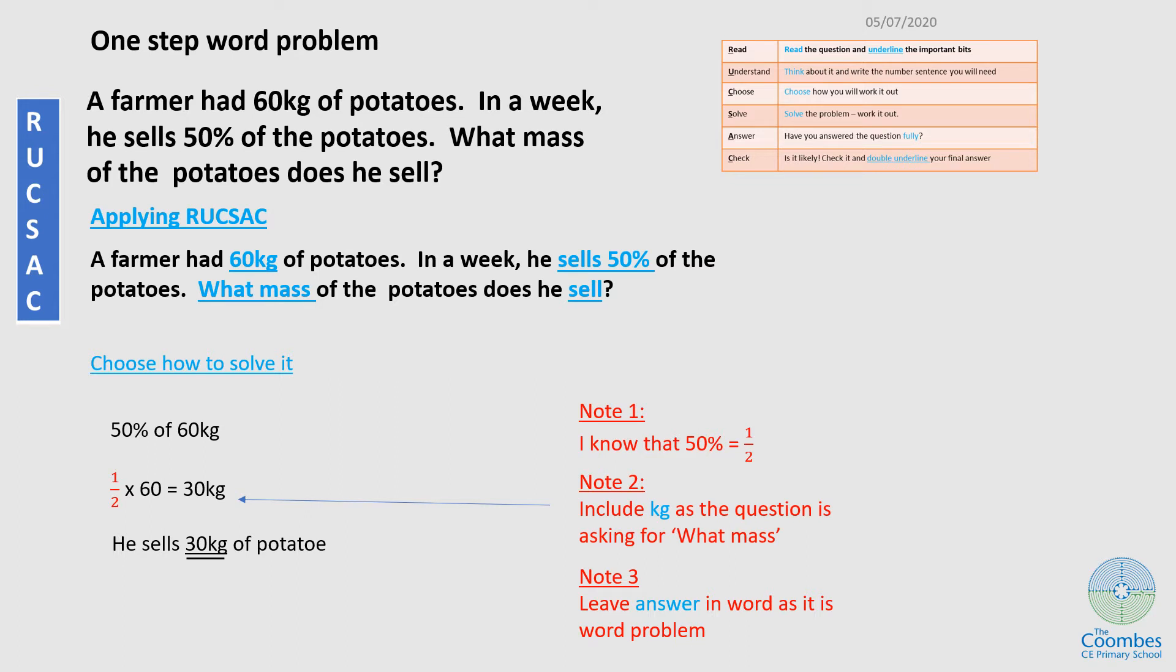Now, I can think about it and then write a number sentence. So from the question, he sells 50% of 60. So I'm going to write it as a number sentence. Now, in choosing how to work it out, I know 50% is another way of saying half. So I can actually rewrite it as half times 60. And in solving half of 60, I know it will be 30.